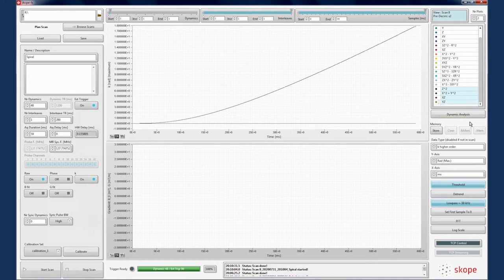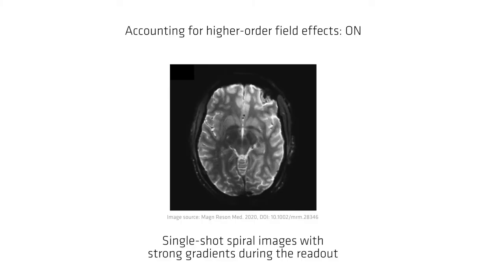Concomitant gradients are the spatially non-linear gradients which occur as a result of Maxwell's laws. ScopeFX measurements also include the concomitant fields. Shown is an example in which another imaging dataset was reconstructed, correcting for concomitant fields, then reconstructed again without that correction. Note the distortion that these fields cause in the image.